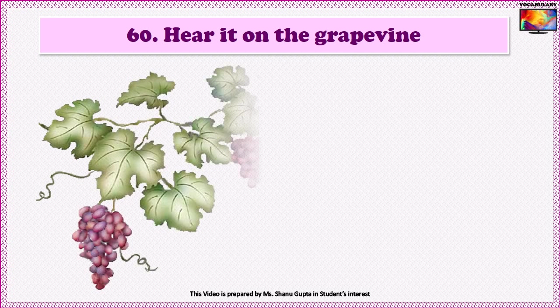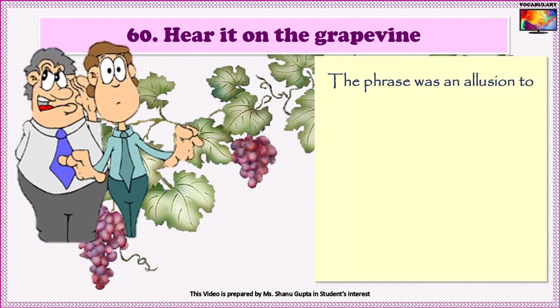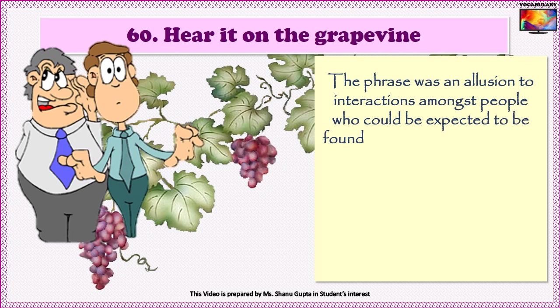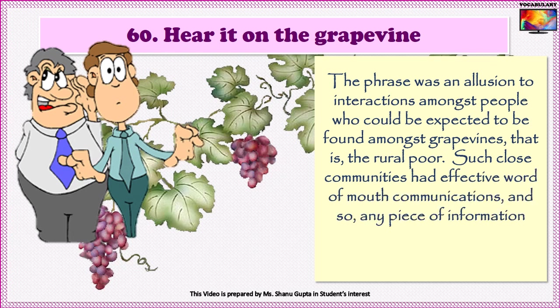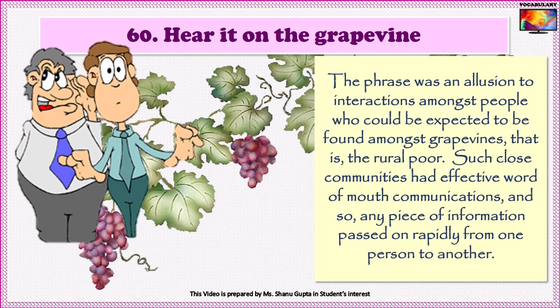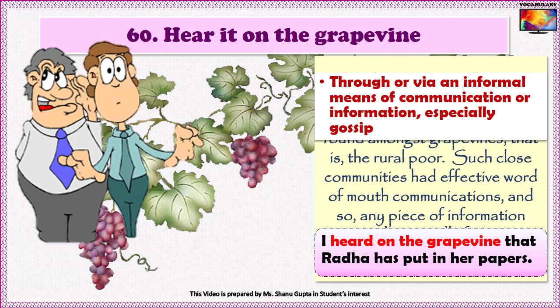The last idiom in this section is 'To hear it on the grapevine.' This phrase was an allusion to interactions amongst people found amongst grapevines, i.e., the rural poor. Such close communities had effective word-of-mouth communications, and so any piece of information passed on rapidly from one person to another, very much like a chain or an extended grapevine. The idiom 'on the grapevine' refers to any piece of information received through an informal means of communication, especially gossip. An example: 'I heard on the grapevine that Radha has put in her papers.'